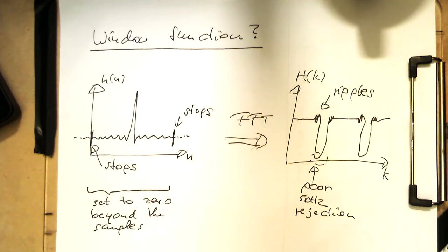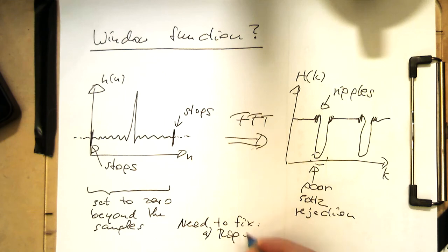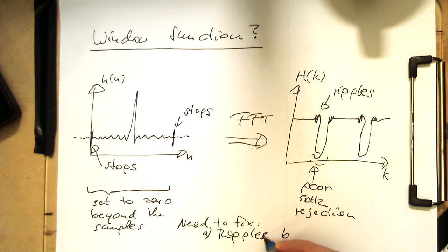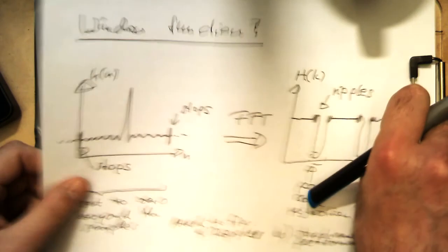So we need to fix two things here. We need to fix the ripples, and we need to fix the stop band performance. So both factors are not ideal. And so, how can we fix that?